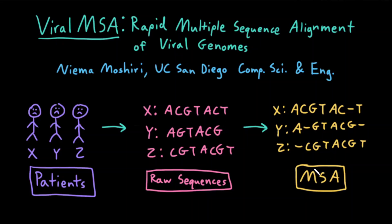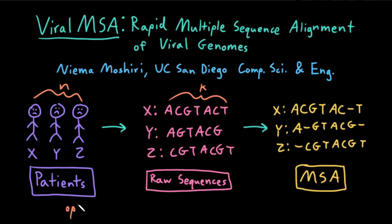Multiple sequence alignment is important for detecting sequence homology, and it's important to be able to get public health or epidemiological information from these sequences. Imagine I have N individuals and each of their sequences is length K. The multiple sequence alignment problem solved optimally is O of K to the power of N. This is extremely slow, especially as N increases rapidly, which it does in the case of a pandemic.